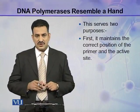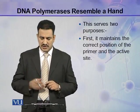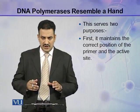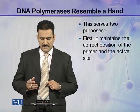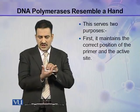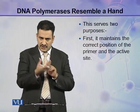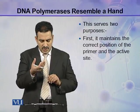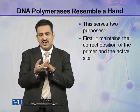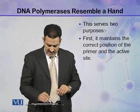This interaction of the thumb domain serves two purposes. First, it maintains the correct position of the primer at the active site. The palm is the active site of DNA polymerase, and the thumb maintains the correct position of the primer at the active site during catalysis.